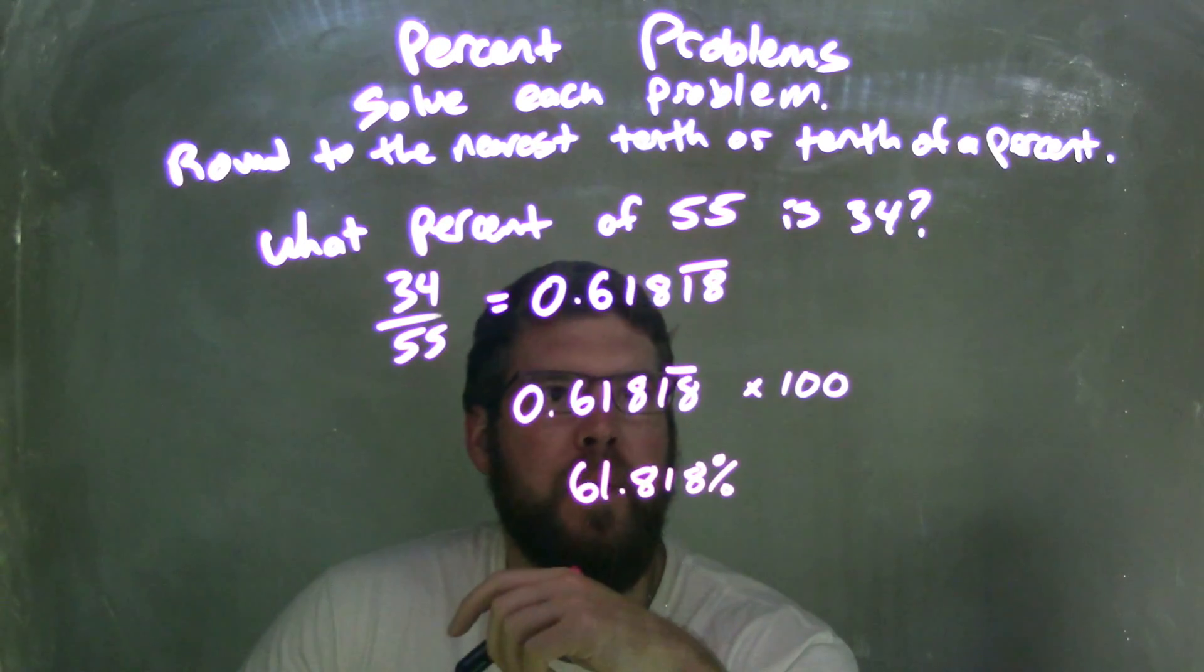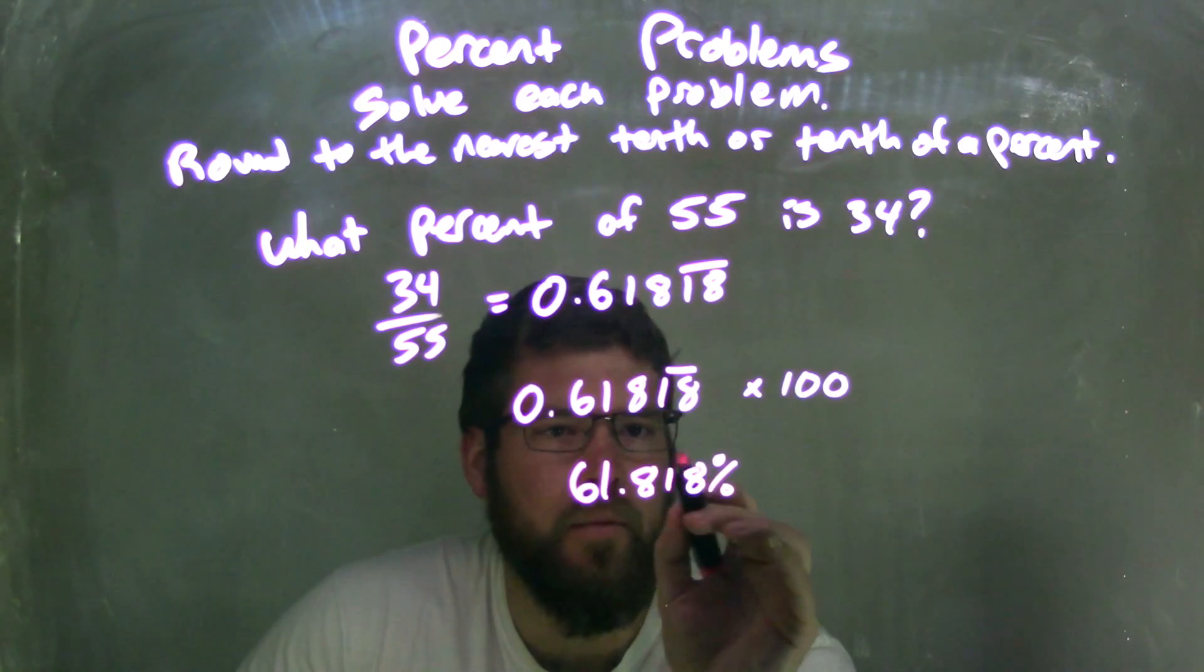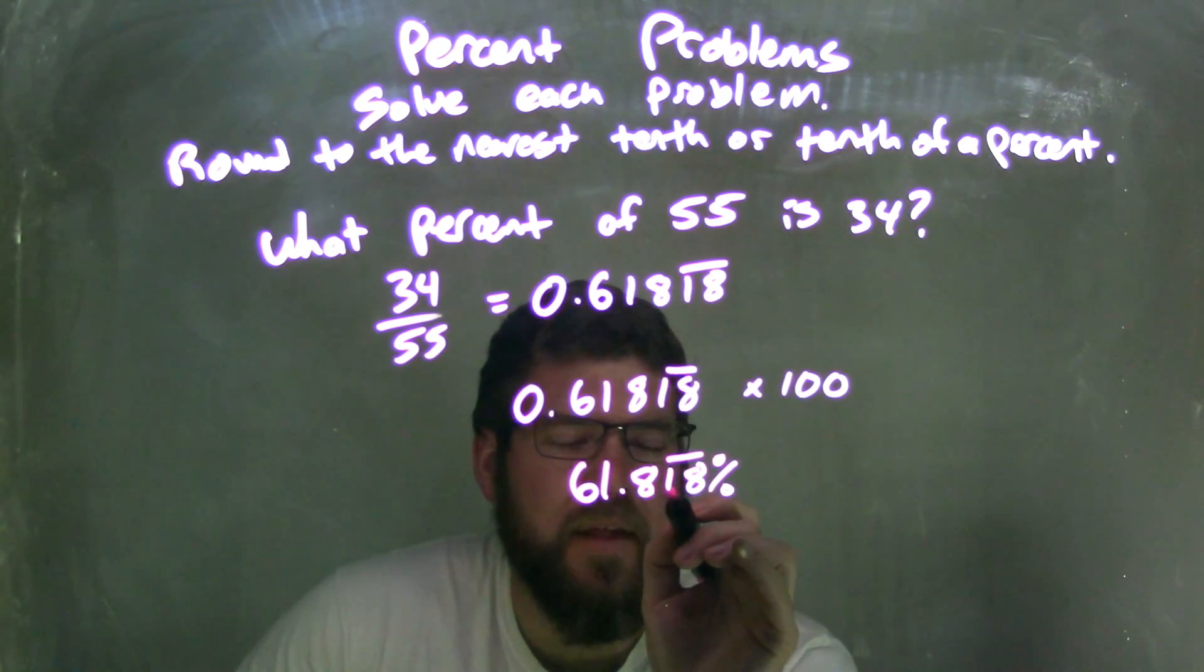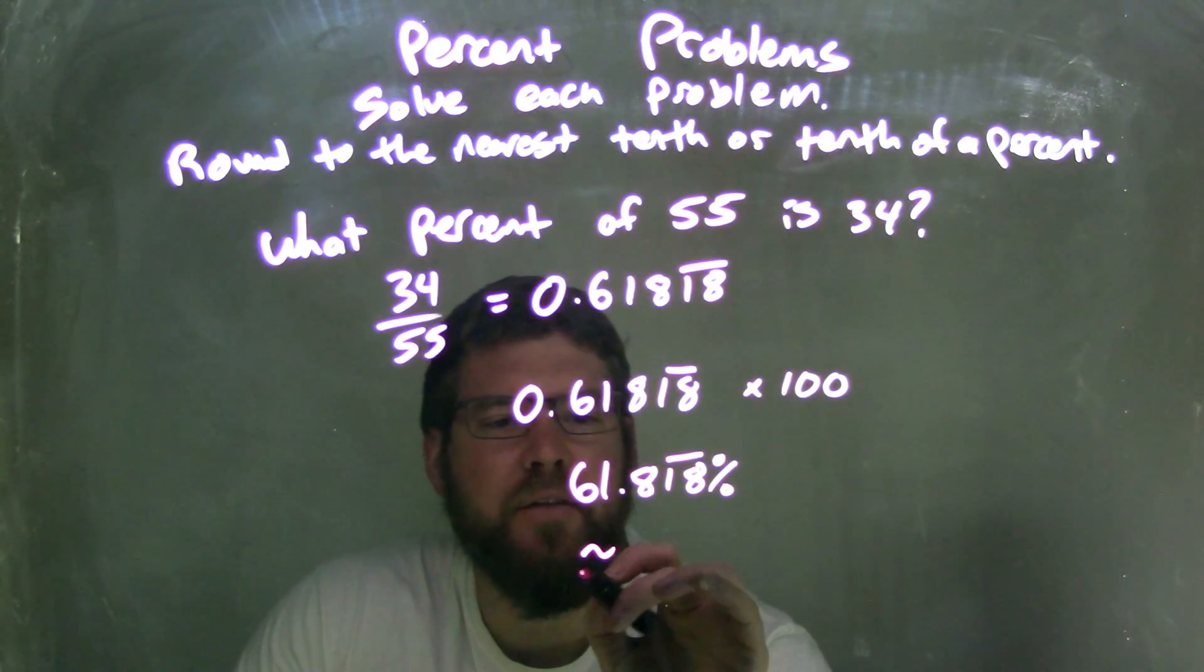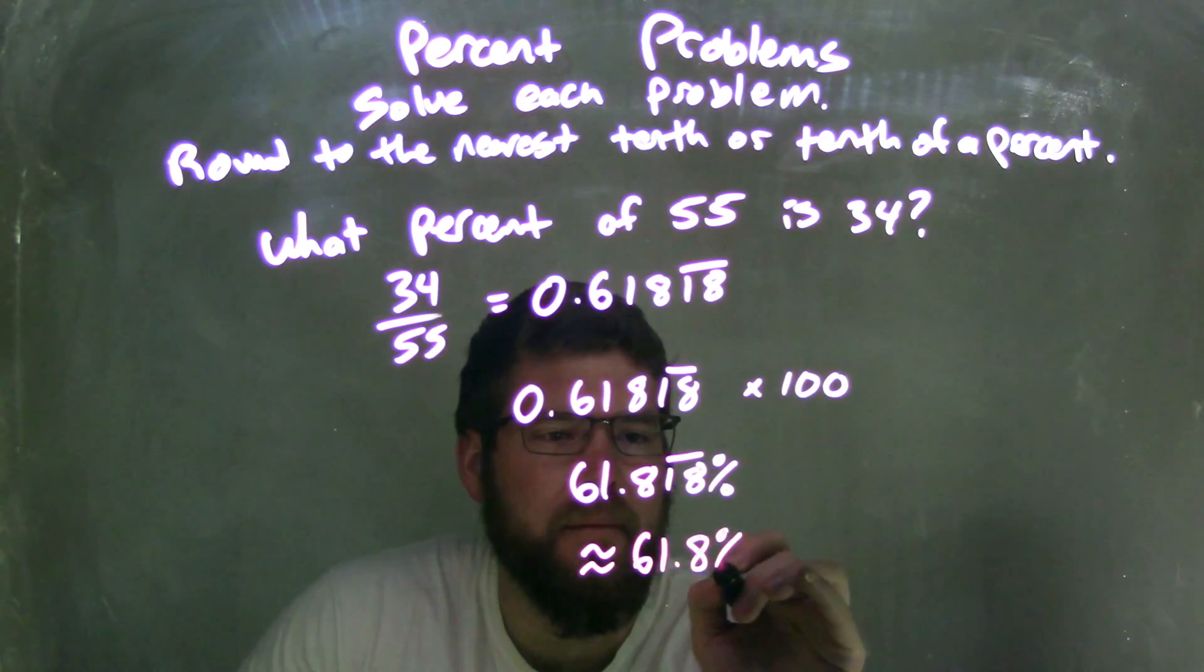But now I need to round that because they say I round to the nearest tenth, so I look at the 8. 8 looks to the 1, 1 causes the 8 to round down and keep it at 8. And so our final answer is approximately, because we're rounding here, 61.8%.